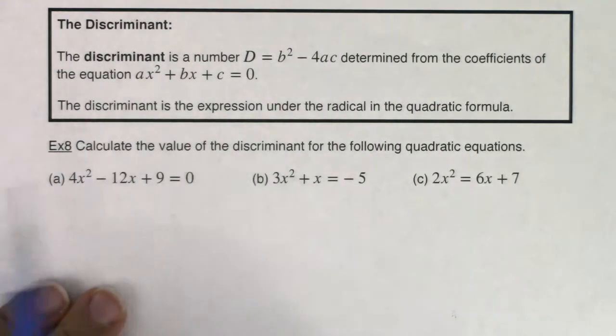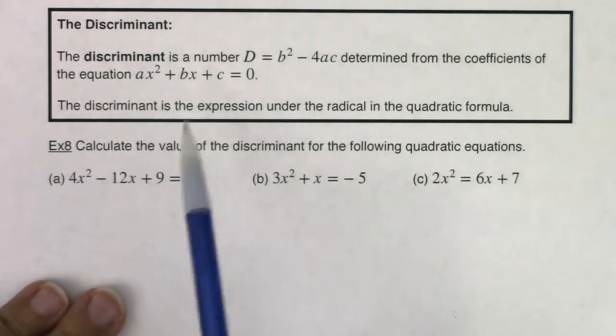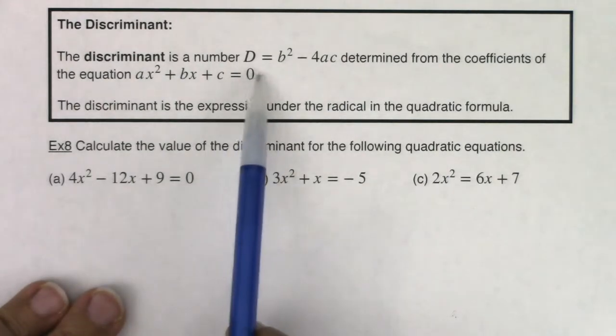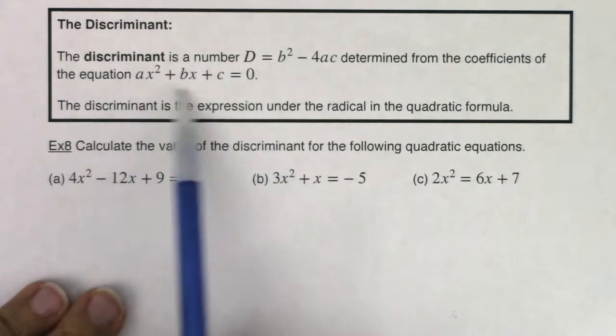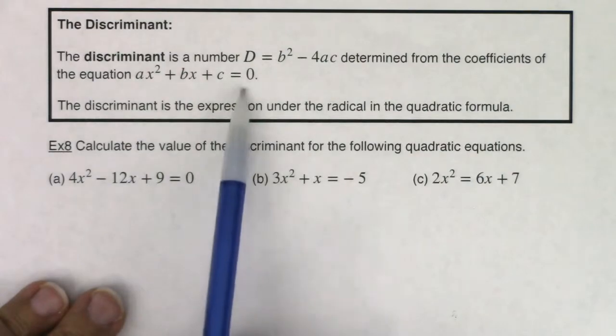So before we just go marching into this, keep in mind that if you want to calculate the value of the discriminant, you need your equation in standard form set equal to 0.